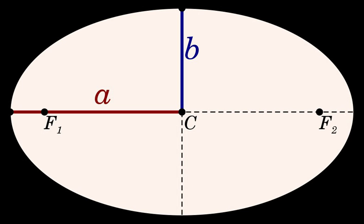The semi-major axis of a hyperbola is, depending on the convention, plus or minus one-half of the distance between the two branches.